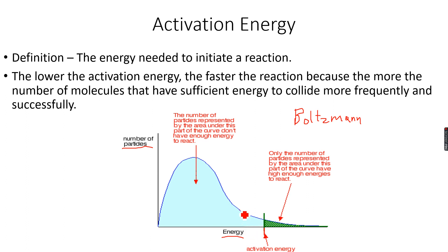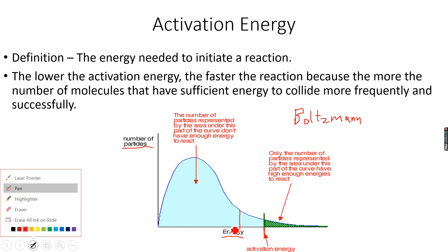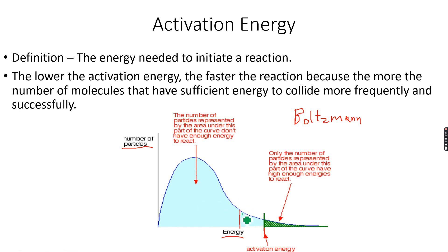So if we lower the activation energy, the green area increases because now the activation energy is here. The red line represents the new activation energy, and I have extended the green area to represent the number of particles with energy greater than the activation energy. Now you can see that the total number of particles with energy greater than the activation energy is greater.